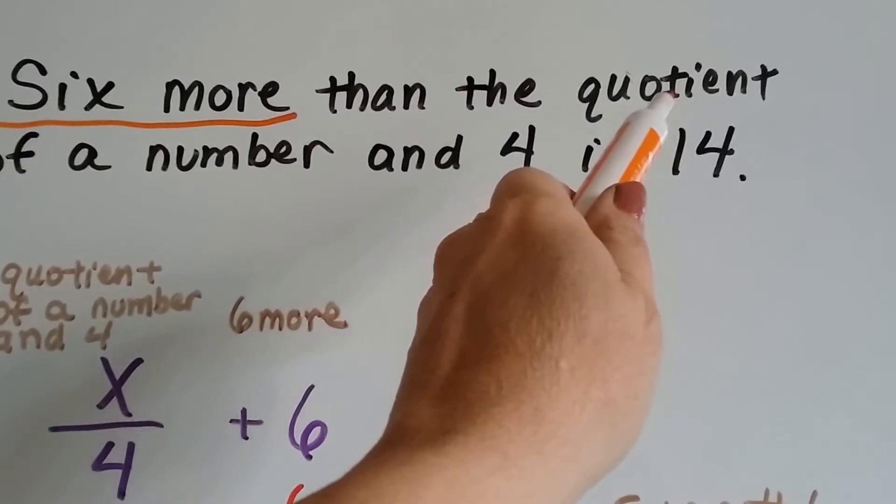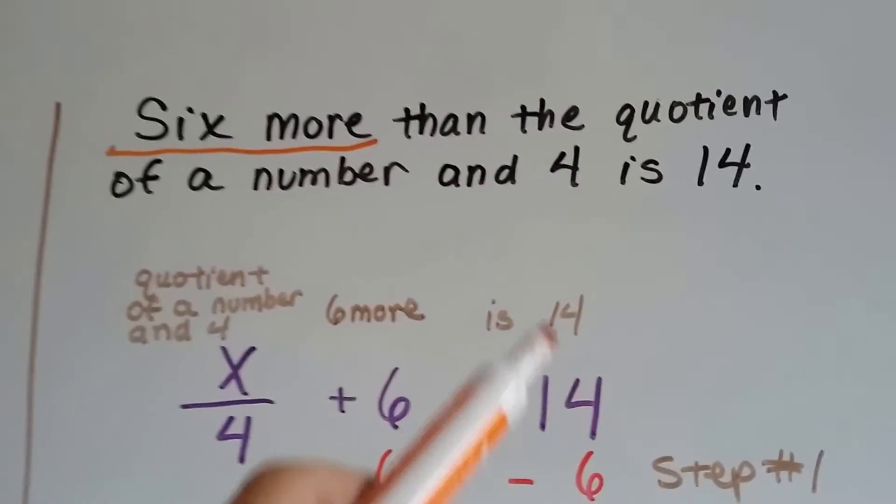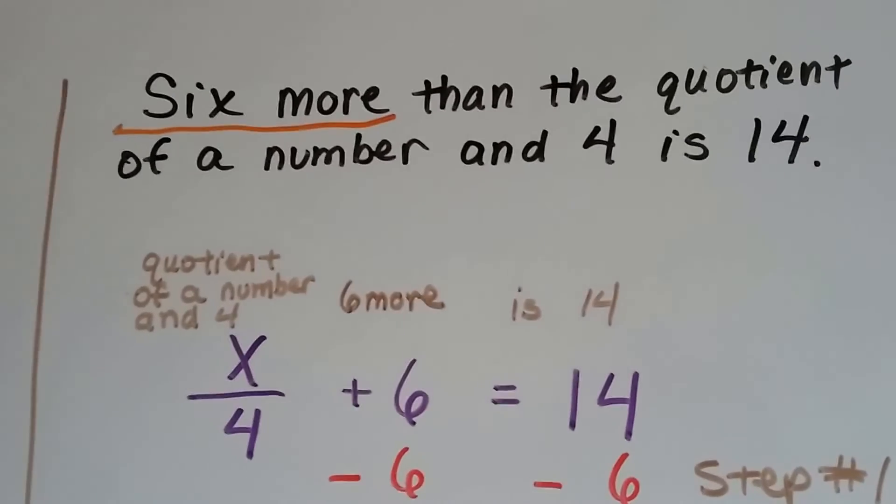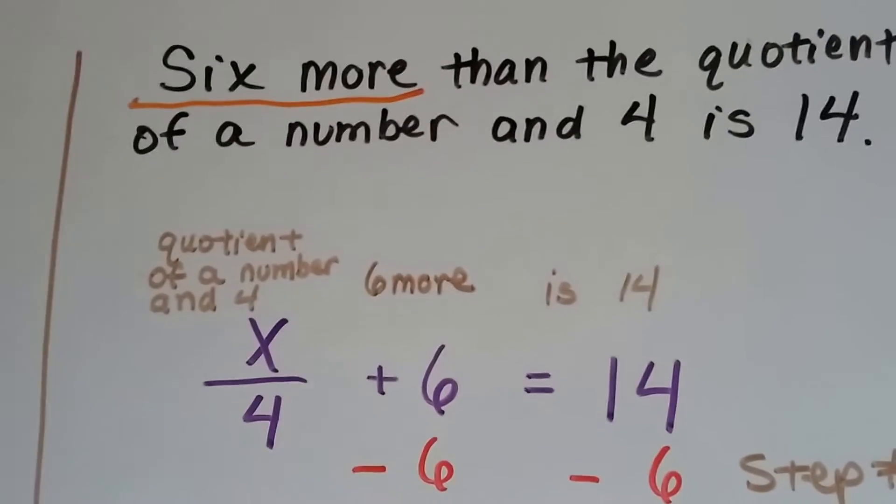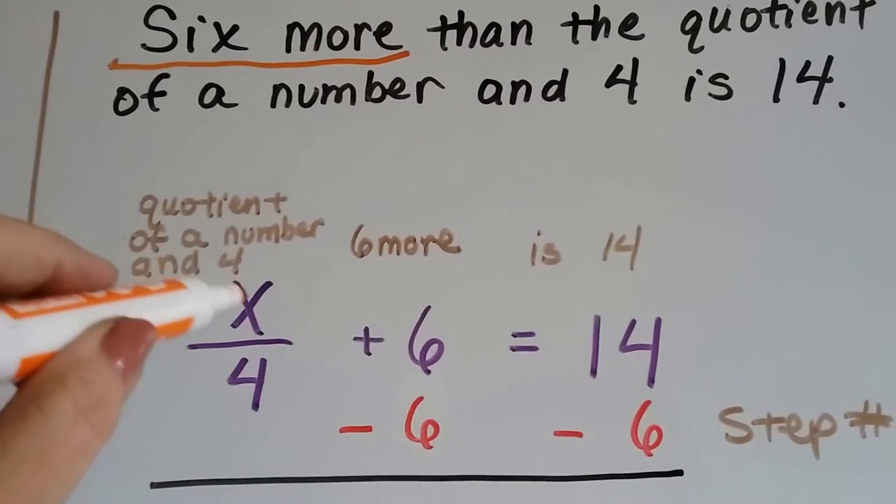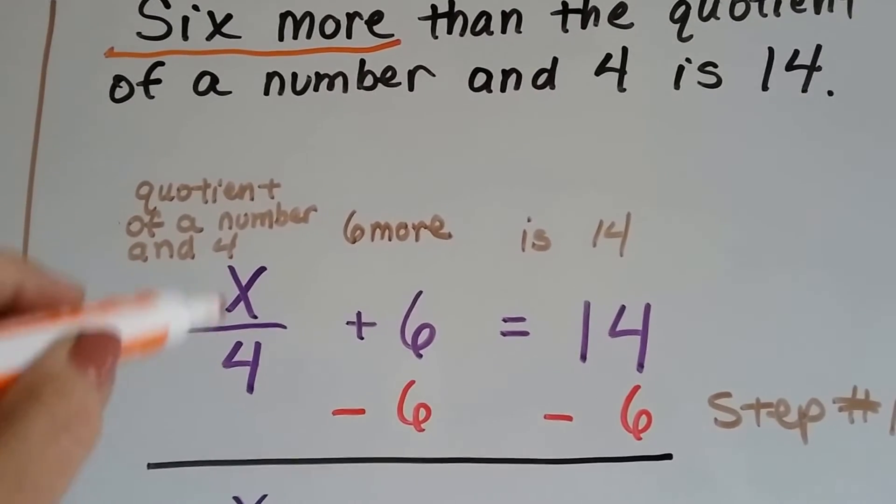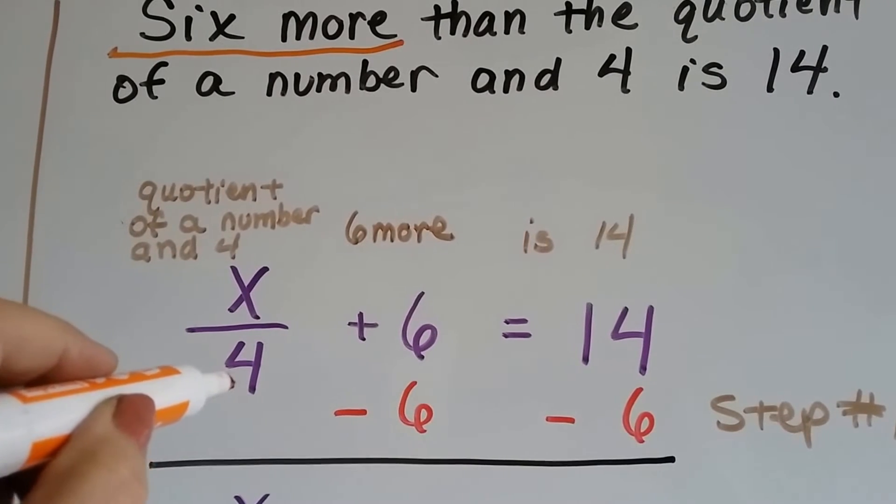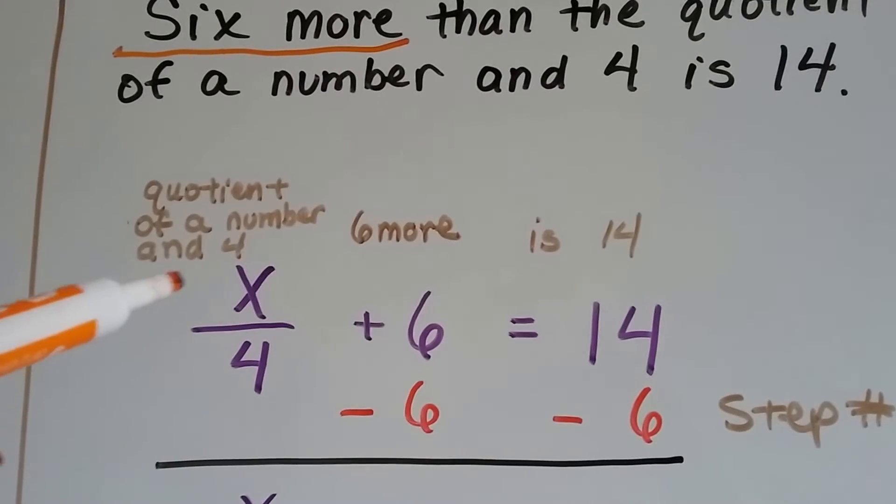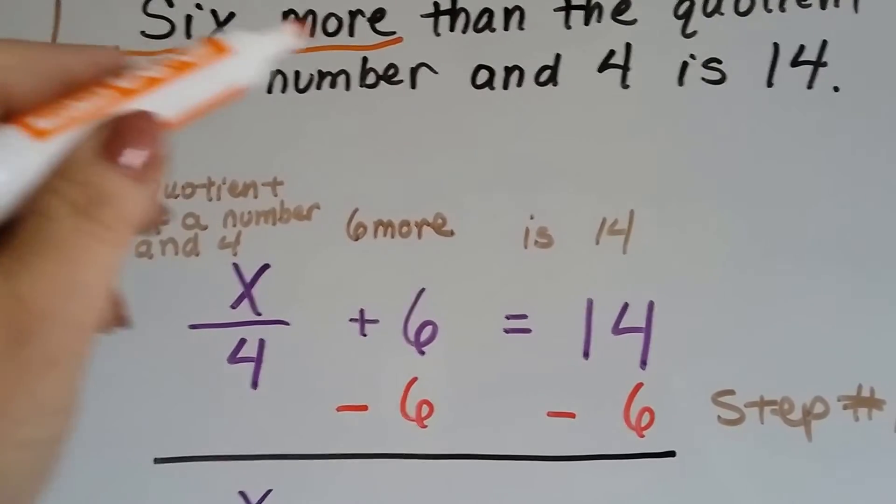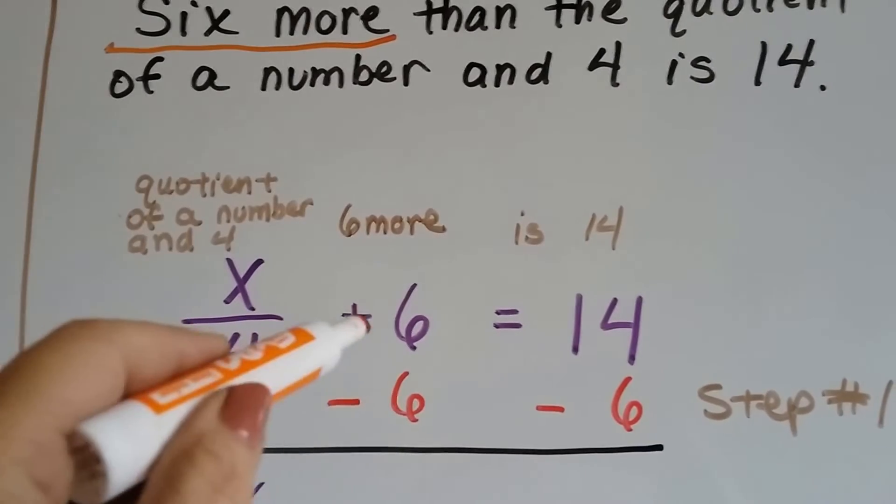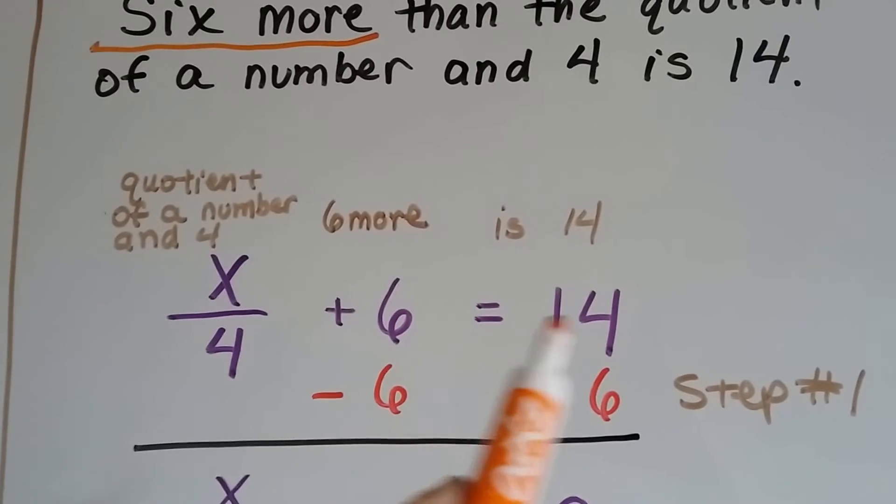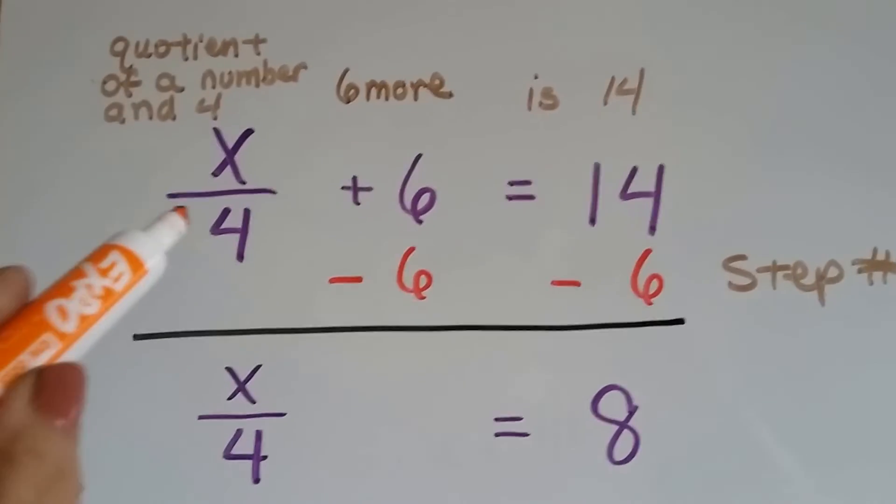Quotient is the answer in division, so it's going to have division. The quotient of a number and 4. So what would be the quotient of a number and 4? Well, that means the quotient of a number and then the 4 is going to be divided by that. So the quotient of a number and 4 would be x over 4. And 6 more than that would be x over 4 plus 6. And it says that it is 14. So that's our equation: x over 4 plus 6 equals 14.